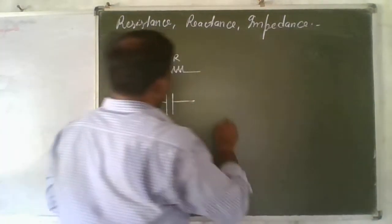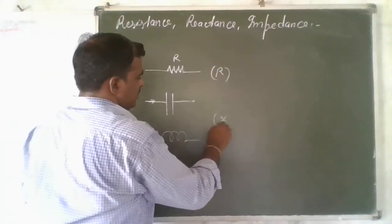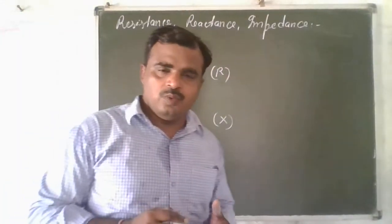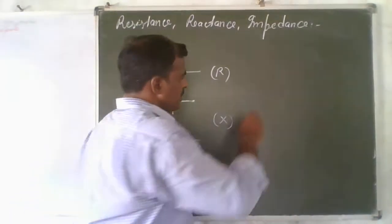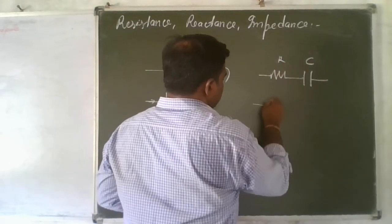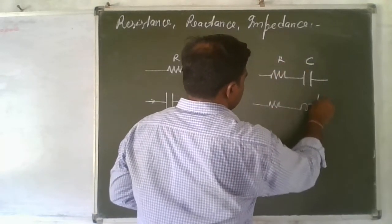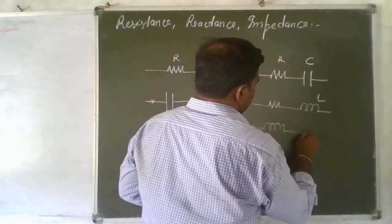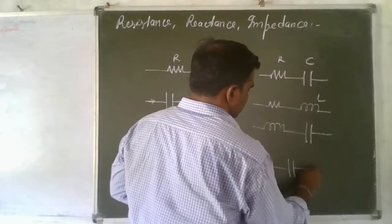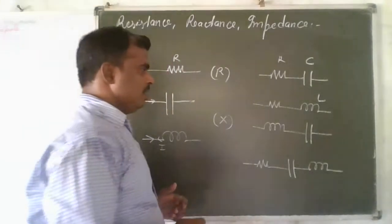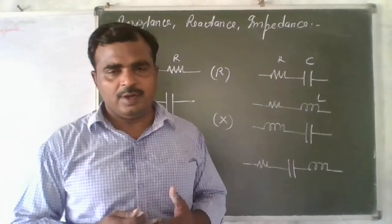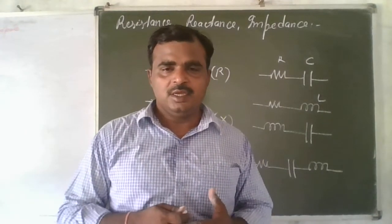Then what about impedance? If there are two or more components — that means resistance and capacitor, or resistance and inductance, or inductance and capacitor — and these components simultaneously apply opposition in the flow of current, then this opposition nature is called impedance.